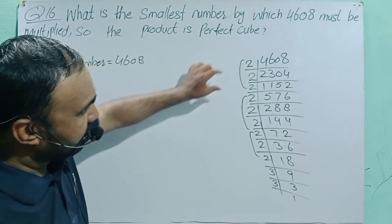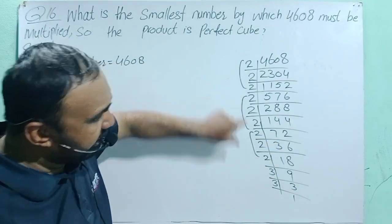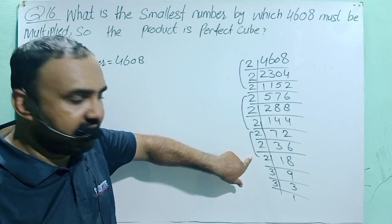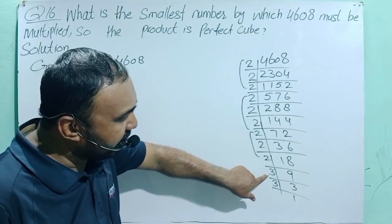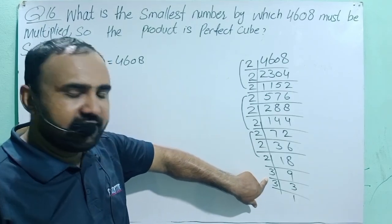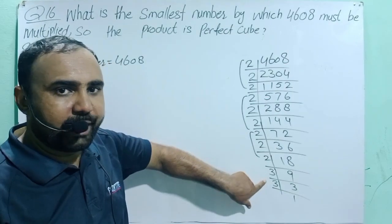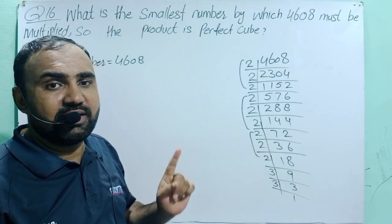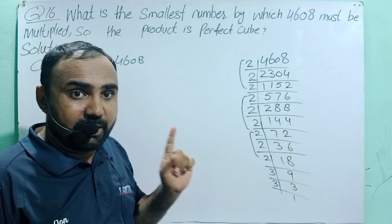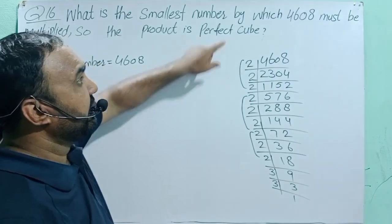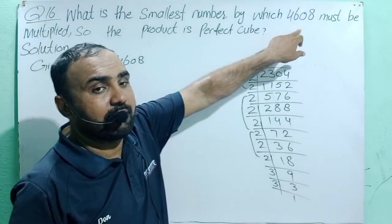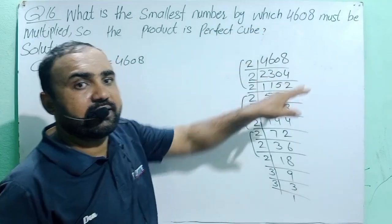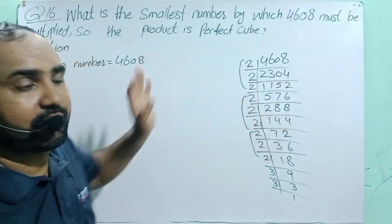Now, 2 appears 3 times, 2 appears 3 times, and 2 appears 3 times. But 3 appears only 2 times, so we must multiply by 3 to make it appear 3 times. Then this will be a perfect cube.